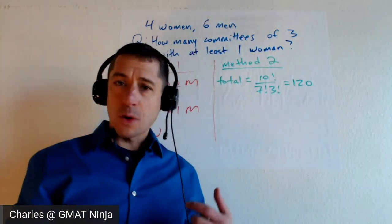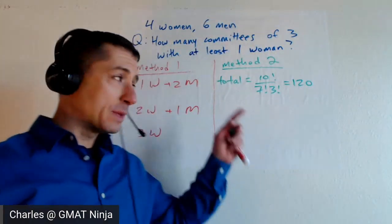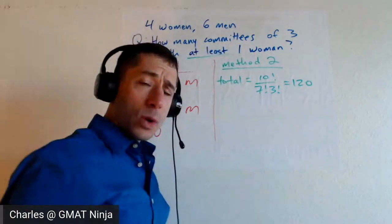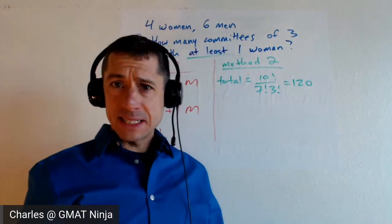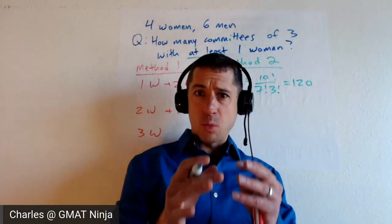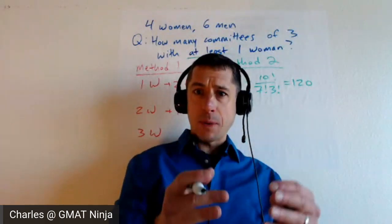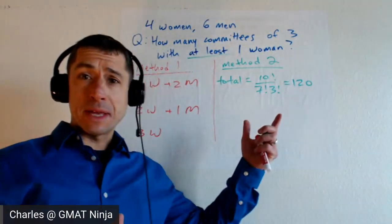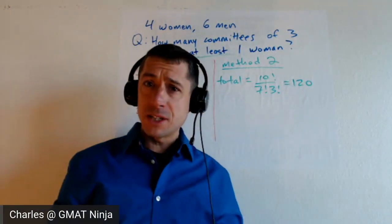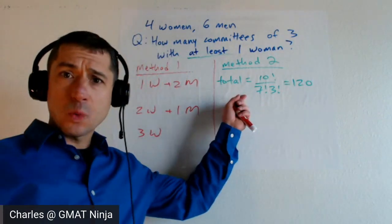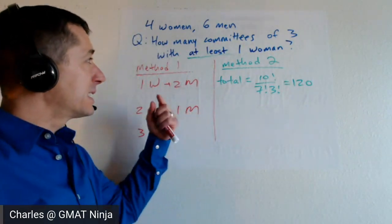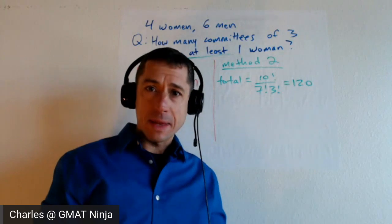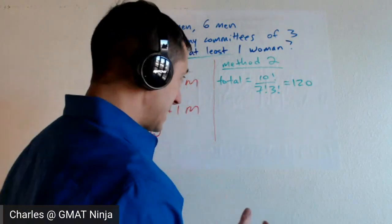How many forms of committee of three from this group of 10? If we say at least one woman, that means every possible outcome — one woman, two women, three women. The only outcome it doesn't include is no women, so all we need to do here is take that total — that 120 — and subtract the number of committees of three we can form that have no women. Easy enough.